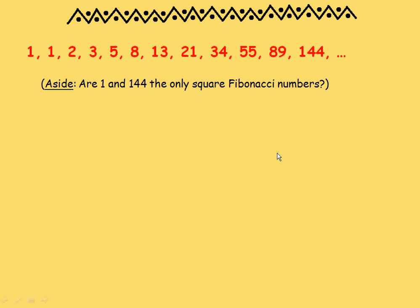They're the numbers 1, 1, 2, 3, 5, 8. Each number is the sum of the two before: 1 plus 1 is 2, 1 plus 2 is 3, 2 plus 3 is 5, and so on. These numbers appear in a myriad of places in mathematics and even in nature, and if you were to go on the internet and search Fibonacci numbers, you'll find surprises there — lots and lots of stuff to keep you busy for weeks, months, years even.